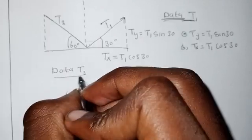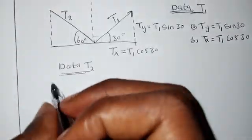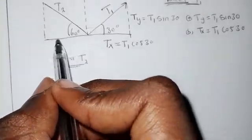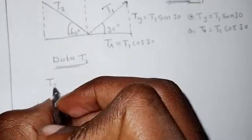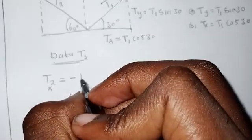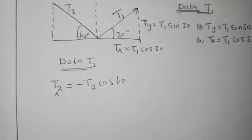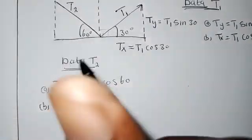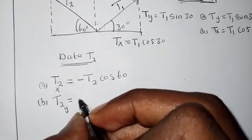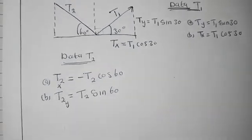For T2: in the X, this component is going to be negative because it's moving in the negative direction. So T2X equals negative T2 cosine 60. For the Y component, the line is going upward, so T2Y equals T2 sine 60.